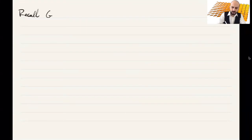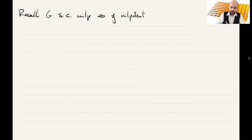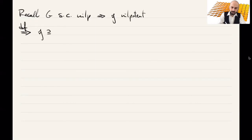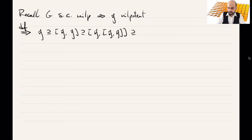Let's recall that if G is a simply connected nilpotent group, then the Lie algebra g is nilpotent. We can take this as a definition of the connected Lie group being nilpotent. By definition, this means that if we take the lower central series — the iterated commutators G, [G,G], and so on — these subspaces will eventually be trivial.